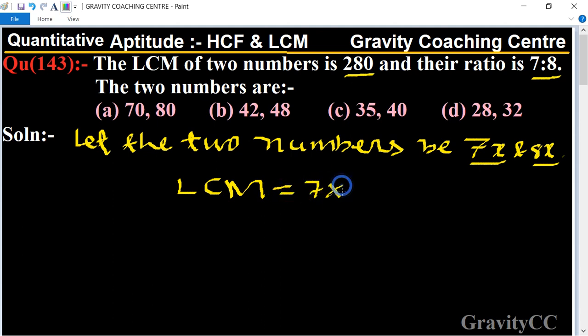According to the question, LCM of two numbers is given as 280 equals 7 multiply 8 multiply x. Therefore, x equals 280 upon 7 multiply 8. Cancel by 7 to get 40, and 8 fives gives 40.